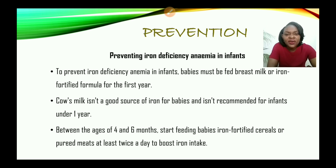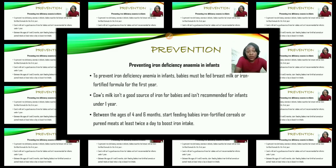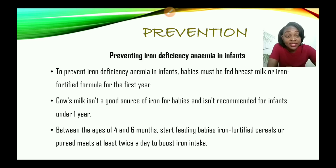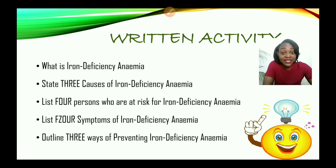To prevent iron deficiency anemia in infants, babies must be fed breast milk or iron-fortified formula for the first year. Cow's milk is not a good source of iron for babies and is not recommended for infants under one year. Between the ages of four and six months, babies can be fed iron-fortified cereals or pureed meats at least twice a day to boost their iron intake.